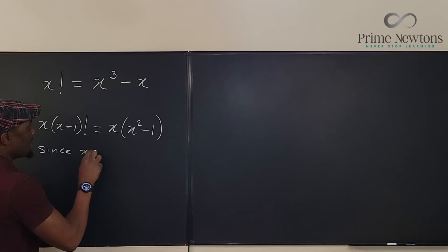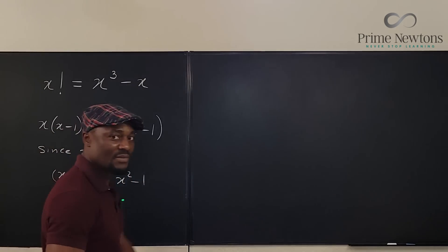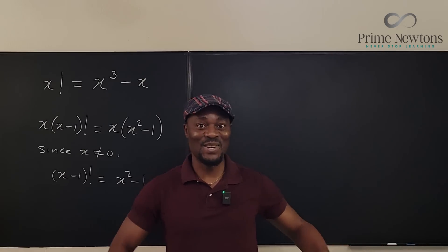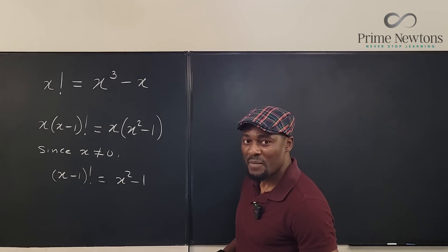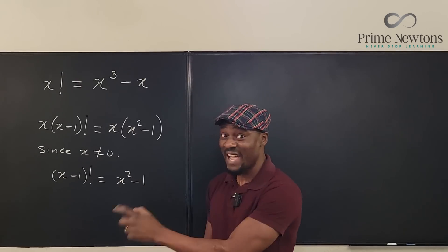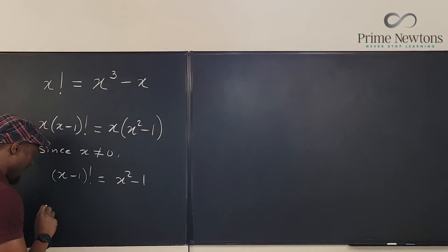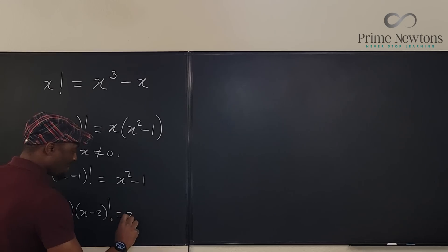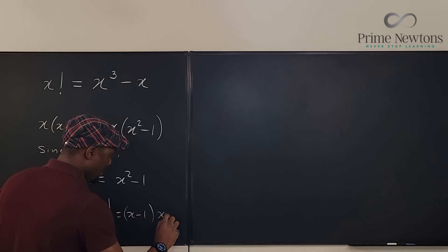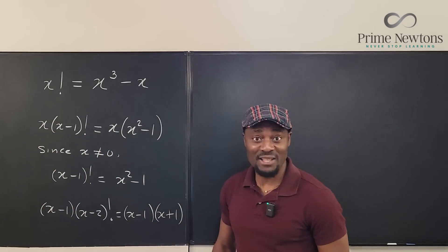Since x is not equal to zero, then I have (x-1) factorial is equal to x²-1. So I have knocked out one of the guesses. So let's go to the next one. So (x-1) factorial equals x²-1. But one thing I can see right now is that x²-1 contains (x-1) when I factor this side. So I'm going to complete this again and say that (x-1) times (x-2) factorial equals (x-1) times (x+1). I just factored the right hand side. Now I can divide both sides by (x-1).